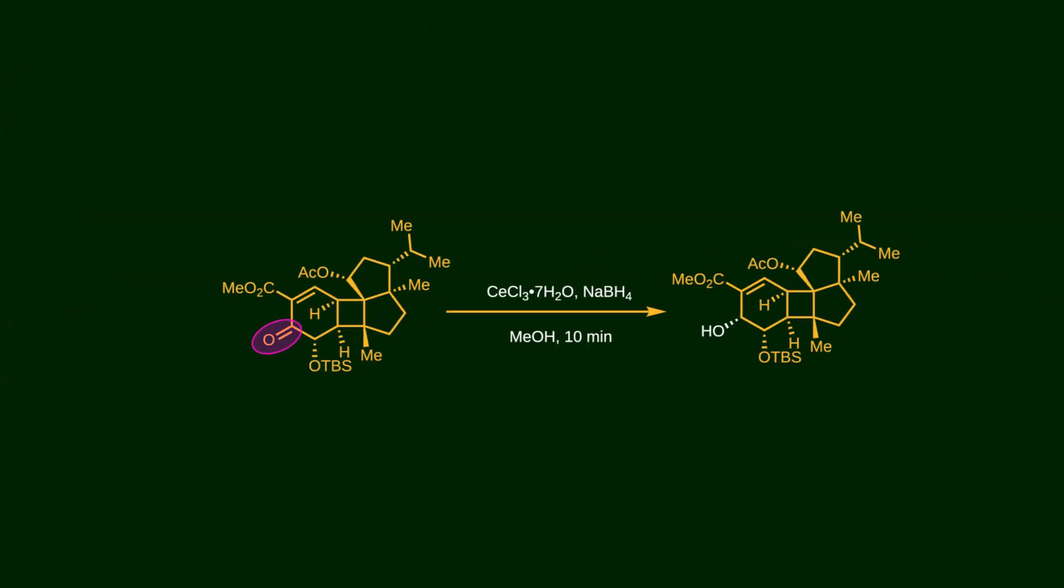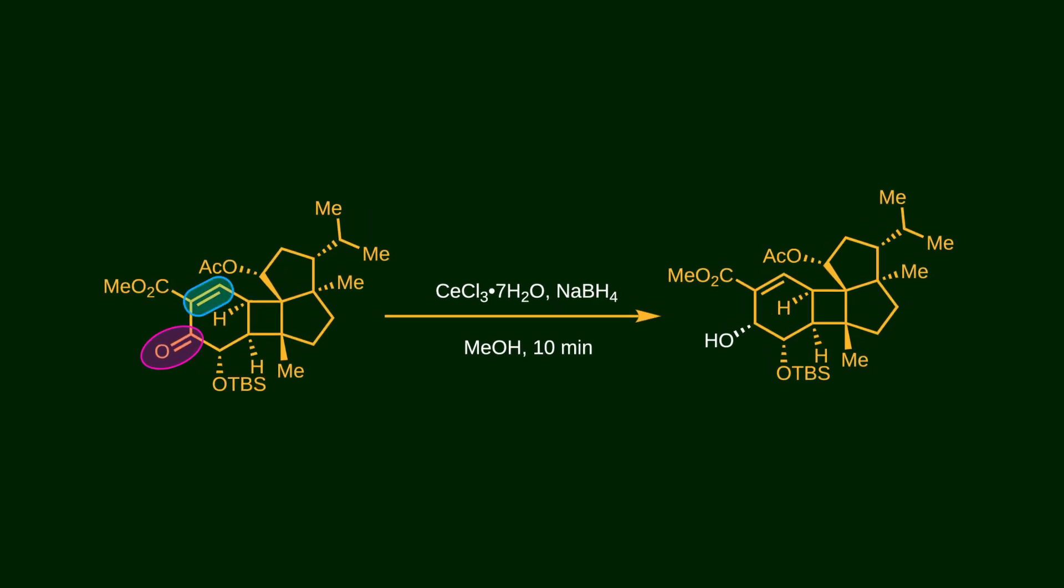Now it's time to remove the carbonyl group. First, we need to reduce it to an alcohol, but since it's conjugated to a double bond, it has to be reduced selectively. The Luche reduction does exactly that—it selectively reduces the carbonyl group to an allylic alcohol. This selectivity can be explained by HSAB theory.